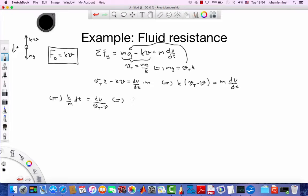And now we can integrate. So k over m, that's a constant and we integrate here over time from some initial time zero to some arbitrary time t, dt. And on the right hand side, from initial velocity, let's say zero, to some velocity v times t.